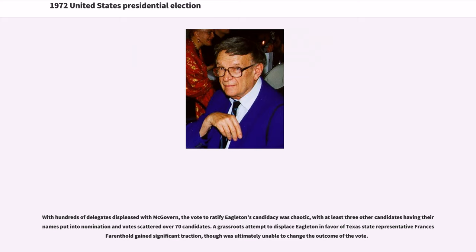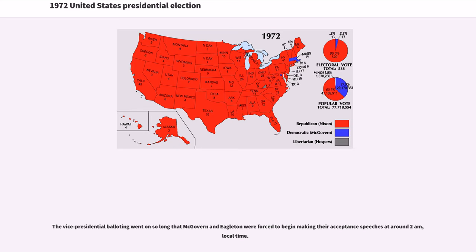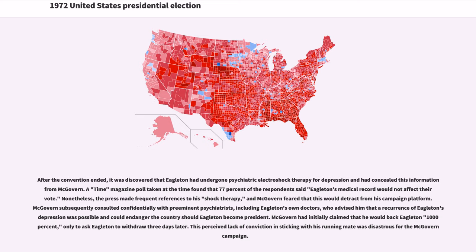With hundreds of delegates displeased with McGovern, the vote to ratify Eagleton's candidacy was chaotic, with at least three other candidates having their names put into nomination and votes scattered over 70 candidates. A grassroots attempt to displace Eagleton in favor of Texas State Representative Francis Farenthold gained significant traction, though was ultimately unable to change the outcome. The vice presidential balloting went on so long that McGovern and Eagleton were forced to begin their acceptance speeches at around 2 a.m. local time. After the convention, it was discovered that Eagleton had undergone psychiatric electroshock therapy for depression and had concealed this from McGovern.